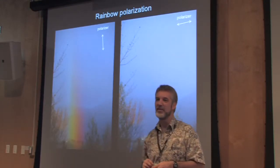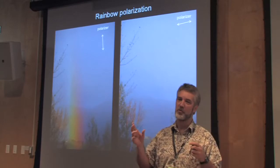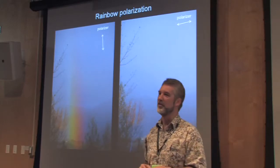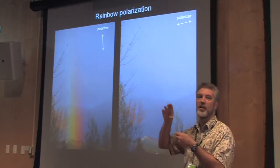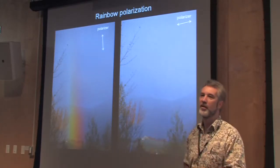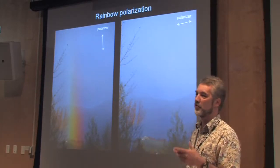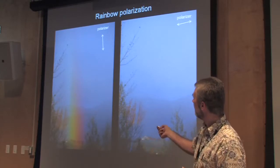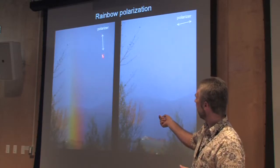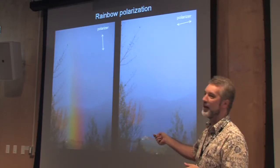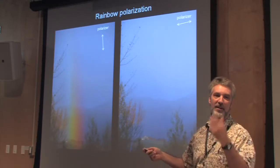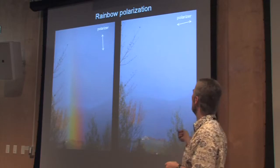You can polarize one part of the rainbow. This is a picture where I'm zoomed in looking at just one part, and so the effect works nicely. The polarizer is oriented this way, and I get this nice enhanced coloration.